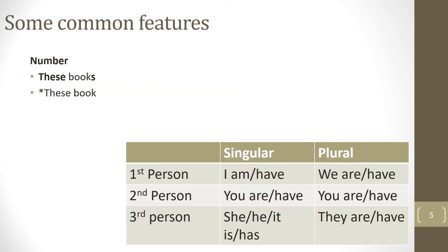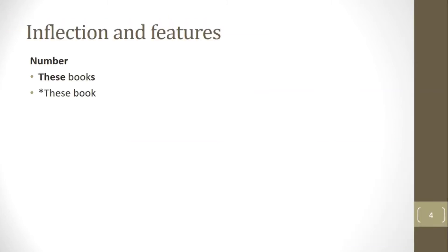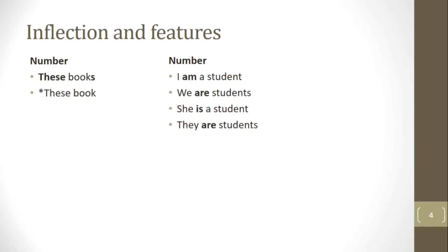Looking at common features in natural languages: in the phrase 'these books,' the plurality of the noun is reflected in the plurality of the determiner — the determiner agrees with the noun. Number agreement can also be expressed in verbs: 'I am a student' versus 'we are students'; 'she is a student' versus 'they are students.' In each pair we can see the effect of singular or plural on the verb.